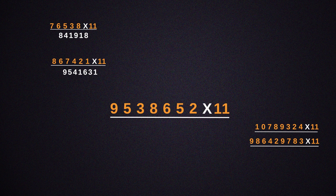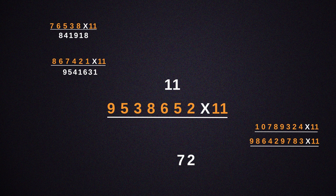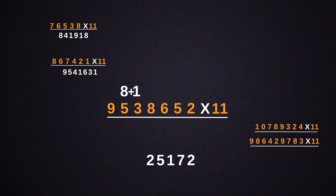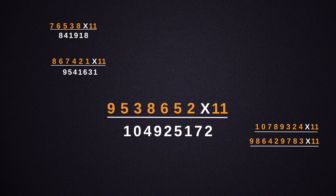Here we have 9,538,652 times 11. So write 2 as it is. And add 2 plus 5, giving us 7. Then add 5 plus 6, giving us 11 — so write 1 in the answer and carry the other 1. Add 8 plus 6, which is 14, plus the carryover, making it 15. Write 5 in the answer. Then 3 plus 8 is 11, plus 1, that is 12. Write 2 in the answer and the 1 is carried. 3 plus 5 is 8, plus 1 becomes 9. Write 9 in the answer. 9 plus 5 is 14 — write 4 in the answer, and add 1 to 9, which becomes 10. So the final answer gets to 104,925,172.